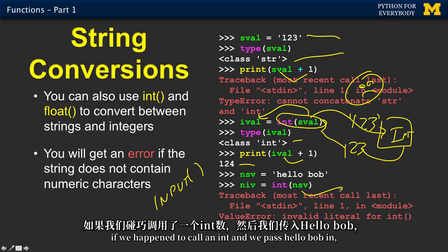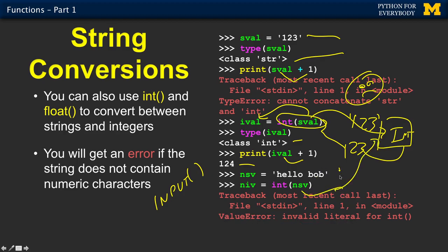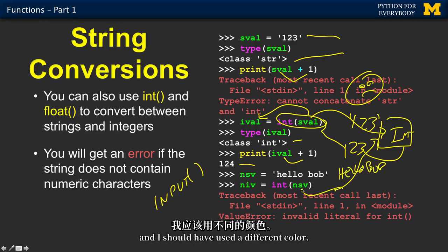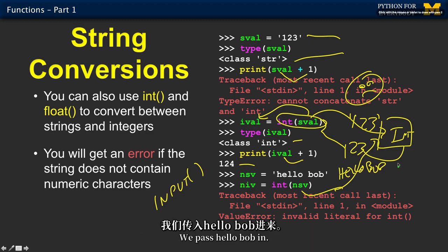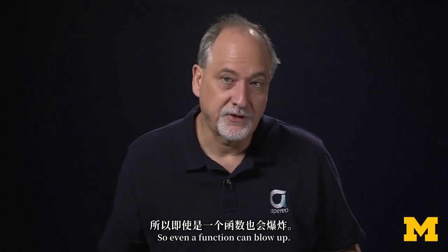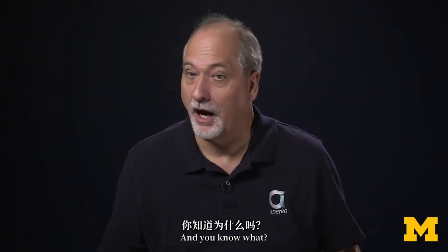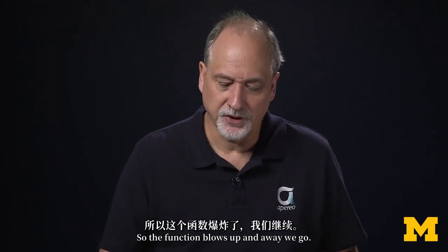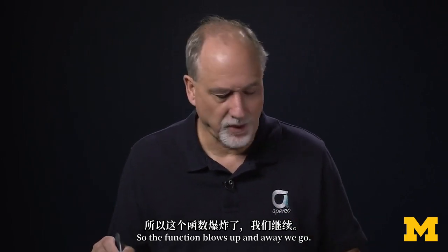If we happen to be calling int and we pass hello, Bob in, this code blows up. And it says, trace back. And that blew up. So even a function can blow up. And you know what? Our code blows up. So the function blows up and away we go.